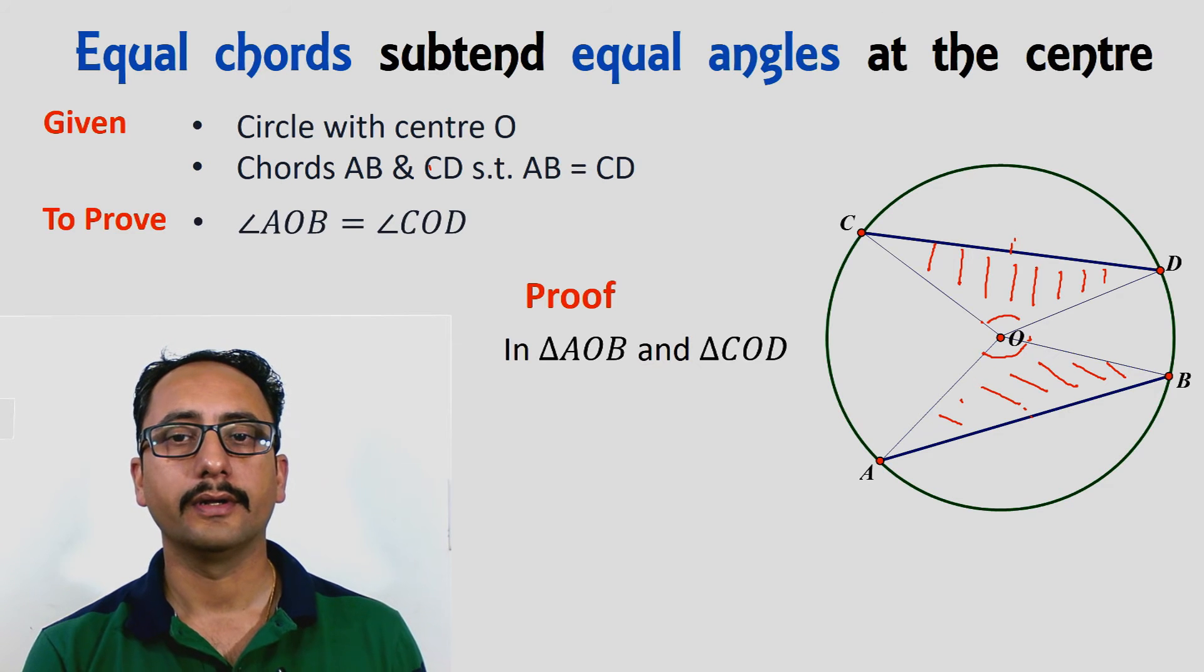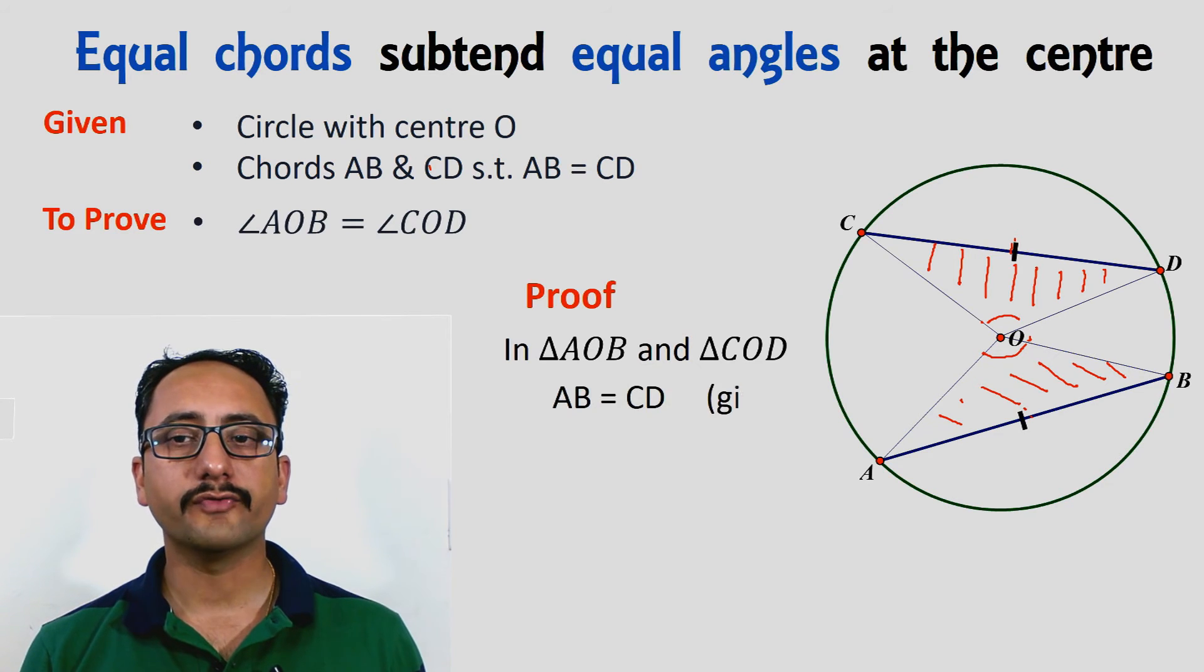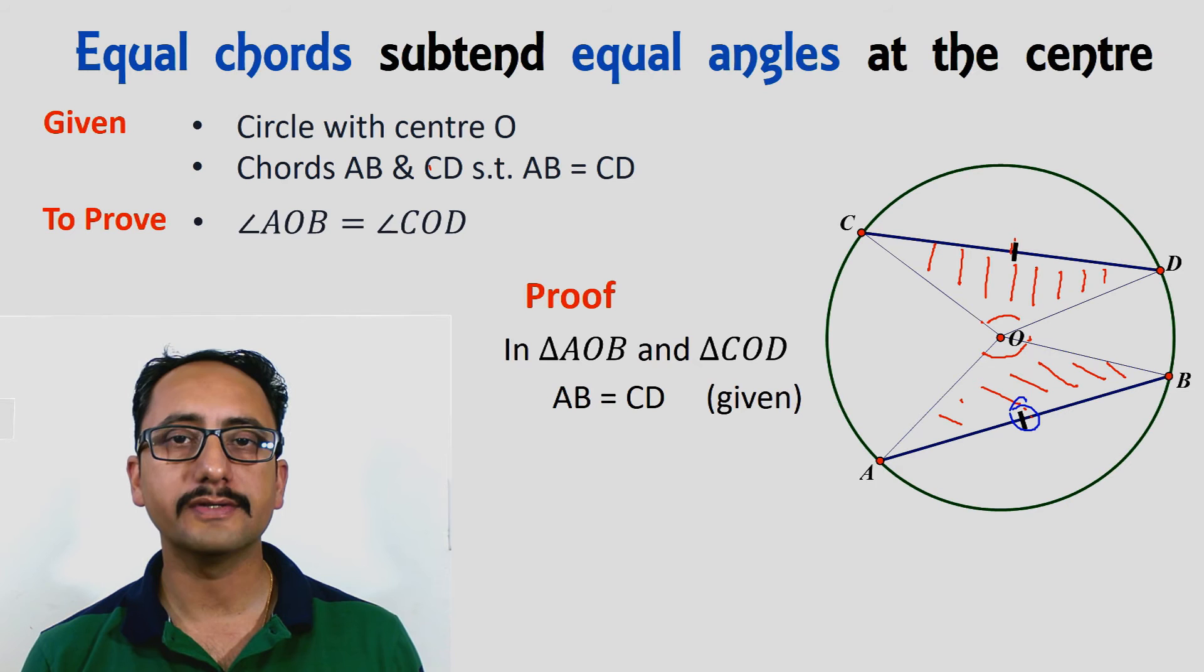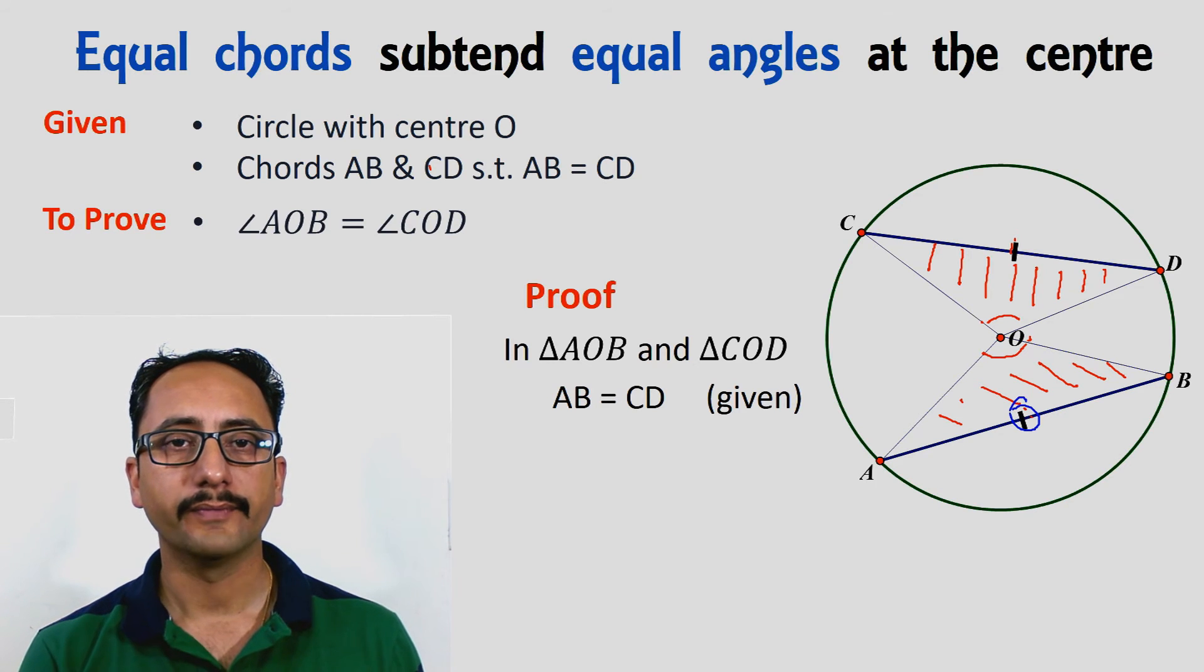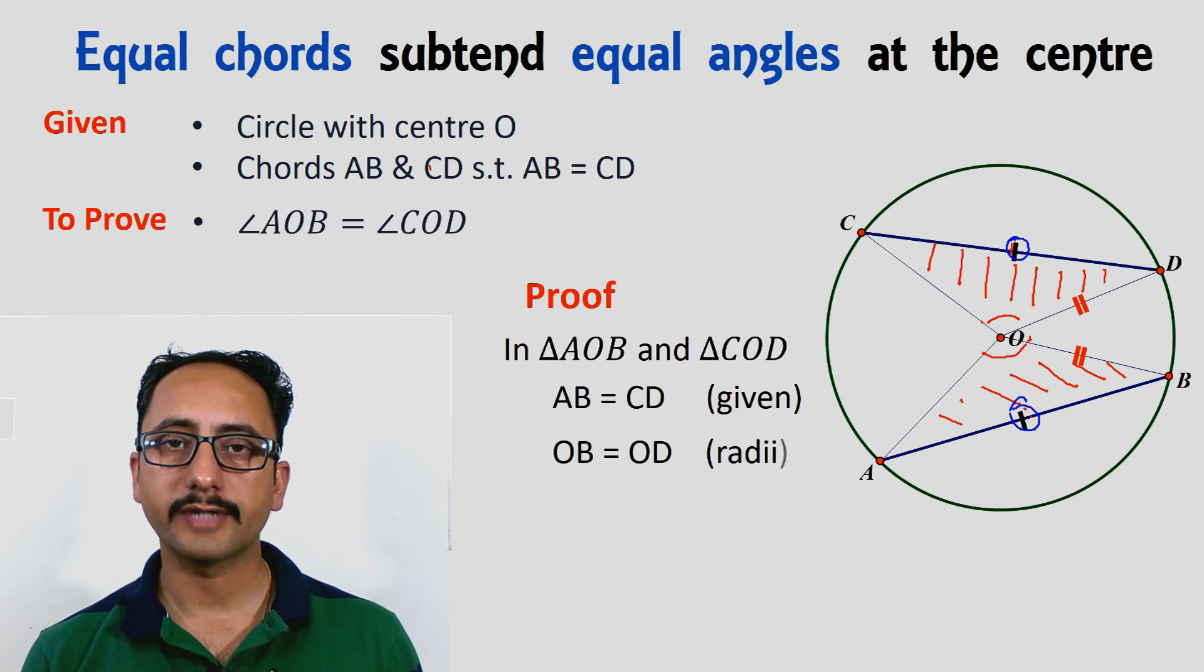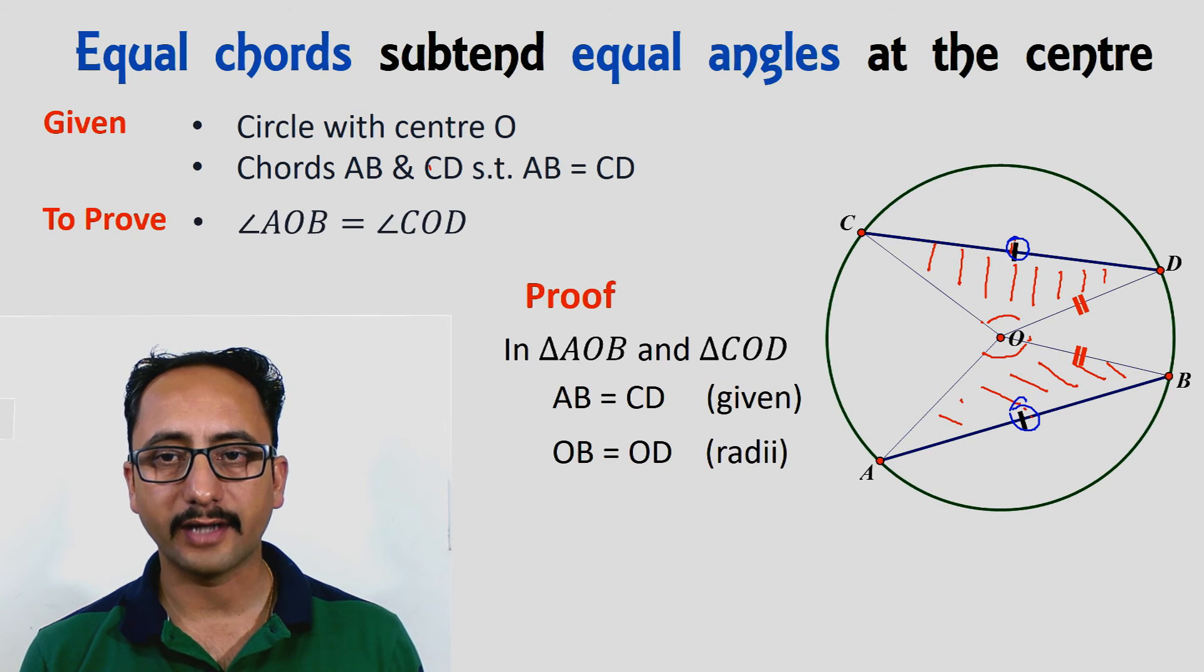First of all, AB and CD, these two chords are equal. It is already given to us that chord AB is equal to CD. Next one is the side OB equals to side OD because these are radii of the circle, and we know that all the radii of a given circle are equal.